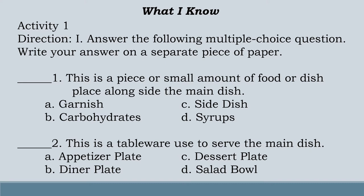What I Know — Activity 1. Direction: Answer the following multiple choice questions. Write your answer on a separate piece of paper. For question number one: this is a piece or small amount of food or dish placed alongside the main dish. Letter A: Garnish. Letter B: Carbohydrates. Letter C: Side dish. Letter D: Serums.